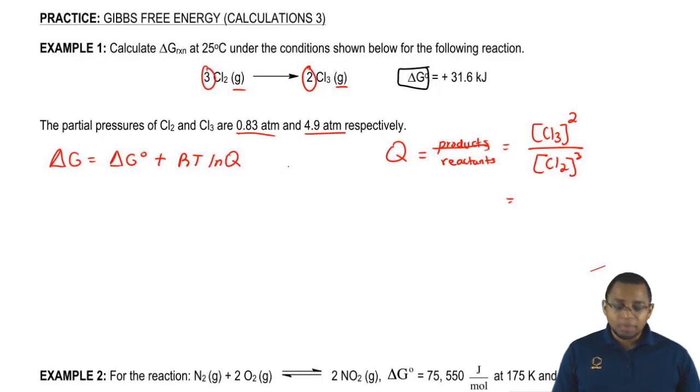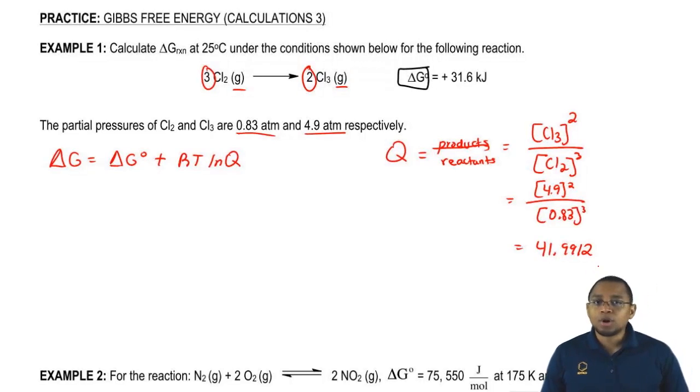Cl3 is 4.9 squared, Cl2 is 0.83 cubed. When we plug this in, it gives us 41.9912. That's what our Q equals.